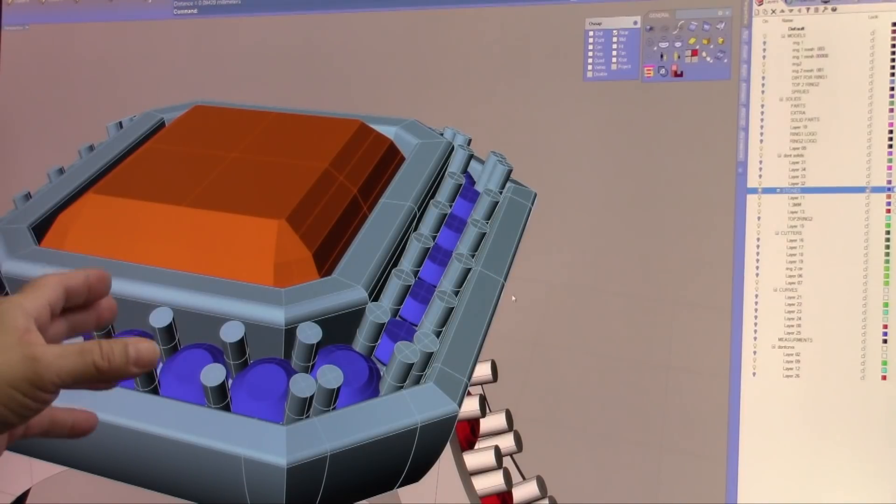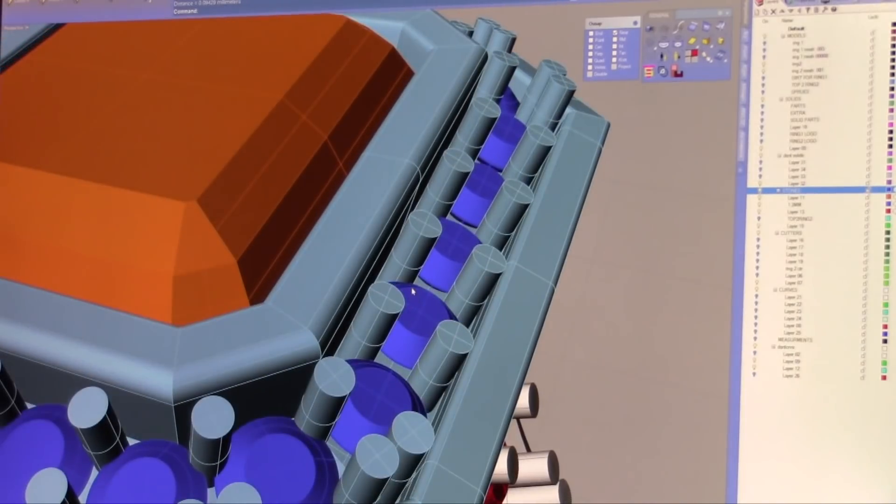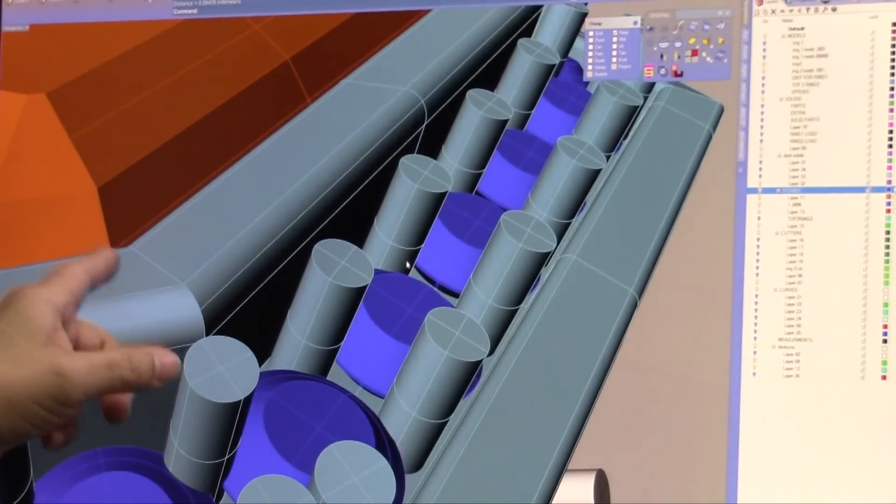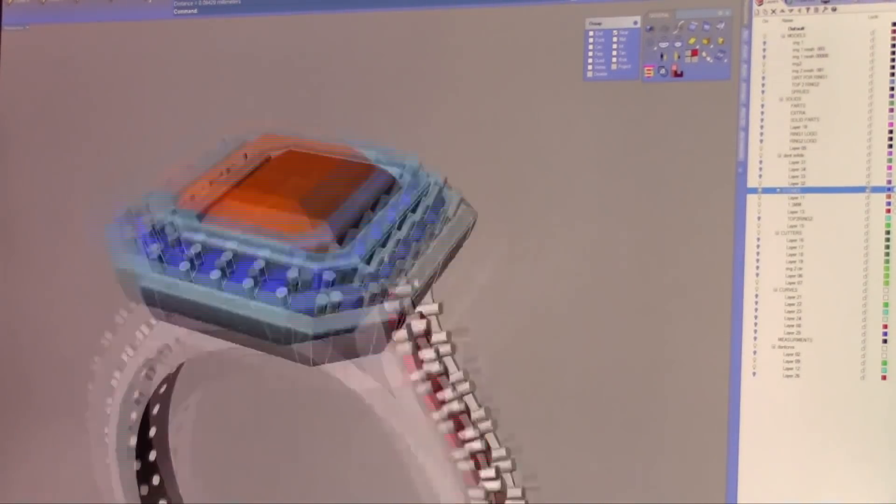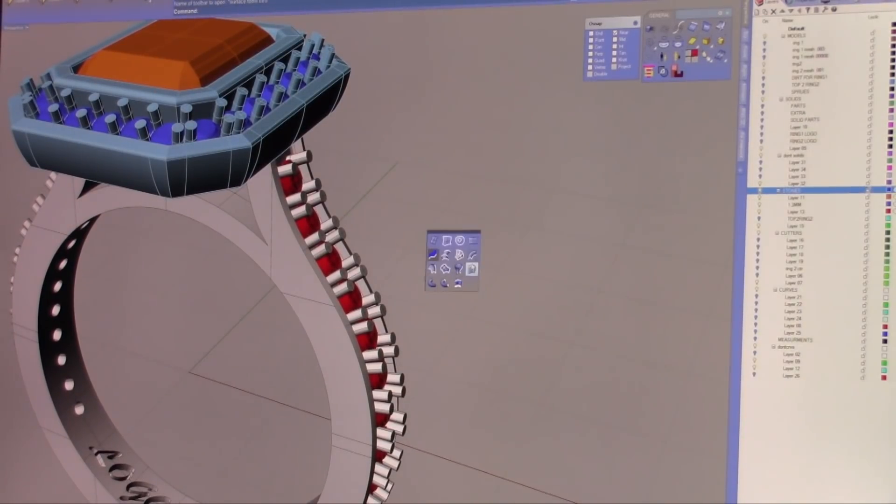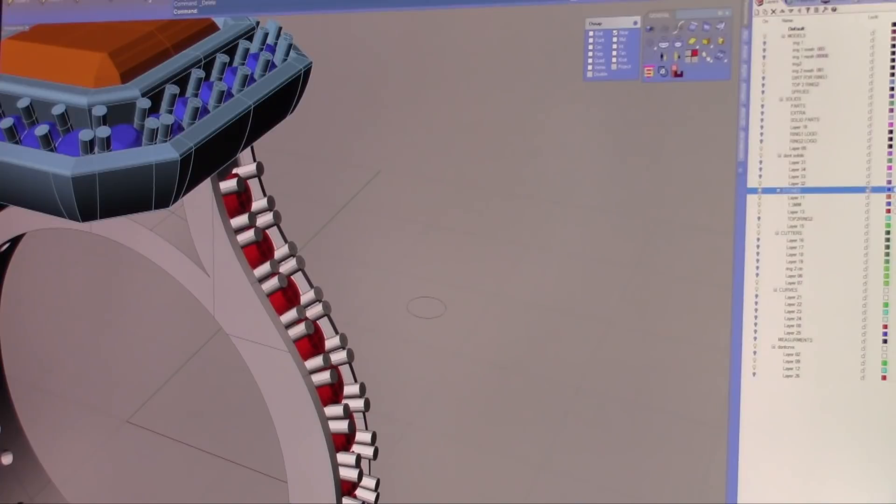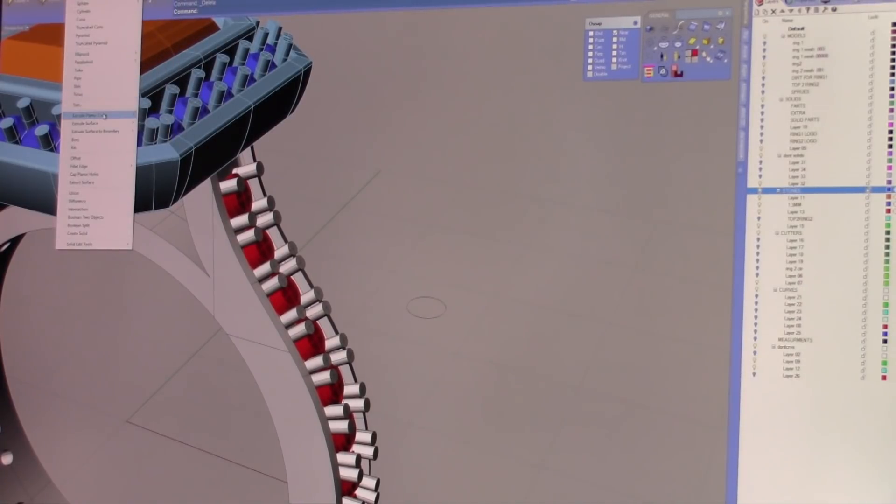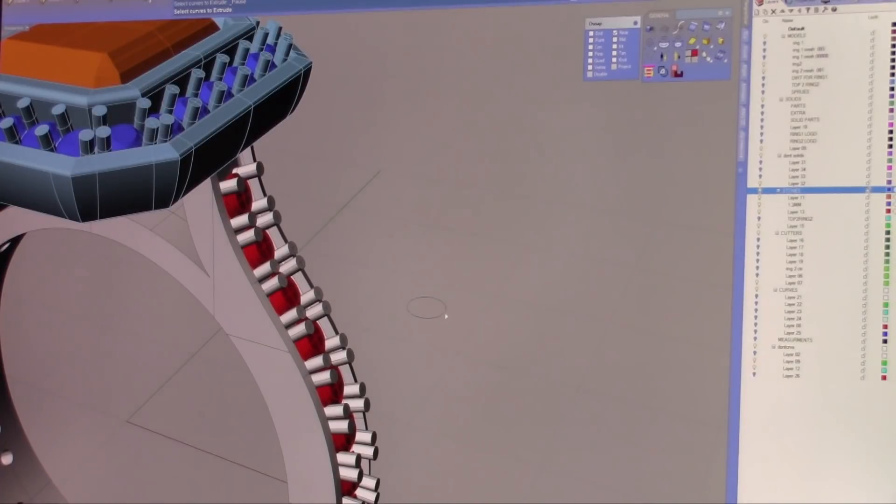The problem here is that these prongs are way too straight. When a prong is built, it's always better if you build the prong with a little bit of a draft, meaning instead of building it straight up like this, it's always better if you go into your solid tools, extrude tapered, so that it has a slight taper. Let's flip this.